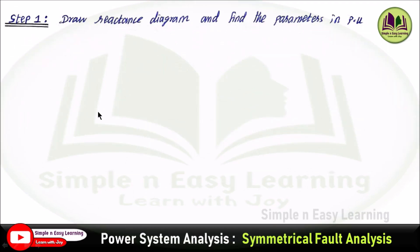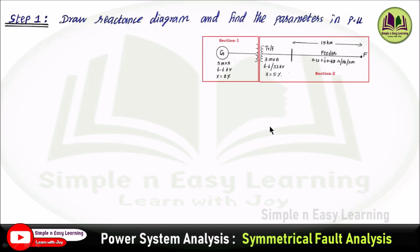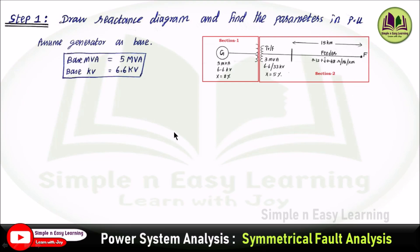Step 1: Draw the reactance diagram and find the parameters in per unit. To find the parameters of the reactance diagram, first we need to divide the single line diagram into sections based on the transformer — section 1 on the primary side and section 2 on the secondary side. Since the base value is not given, we assume the generator as the base. So base MVA is 5 MVA and base kV is 6.6 kV.